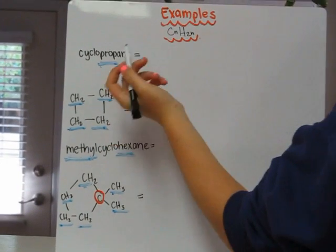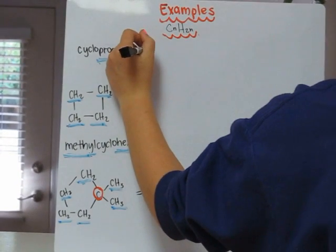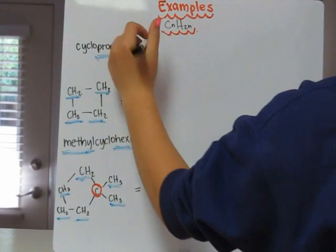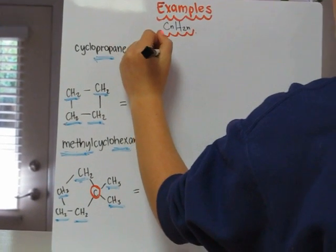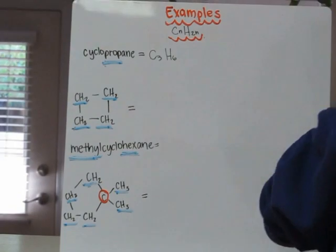We can show this two ways. First, you could do C3 because of the three, and then H would be six because it's two times the amount of carbon.